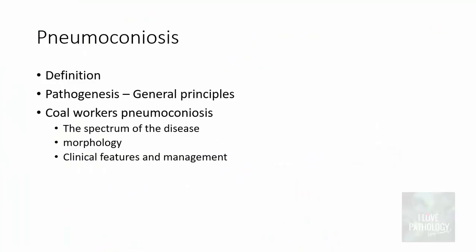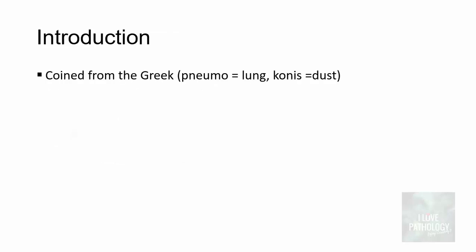Here is the overview: we will see how to define pneumoconiosis, understand the pathogenesis and some general principles, and in detail about coal workers' pneumoconiosis, which includes the spectrum of disease, the morphology, clinical features, and a bit about management.